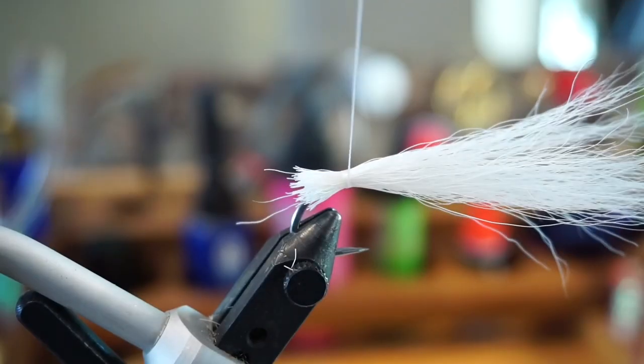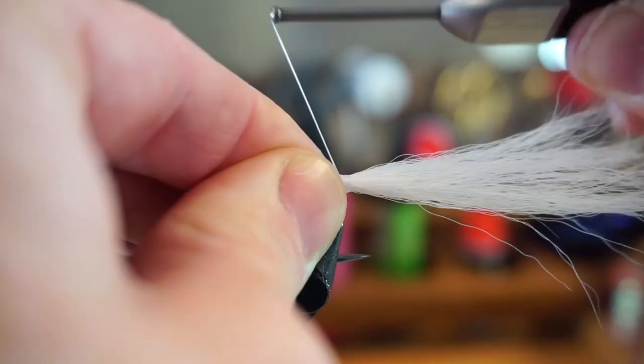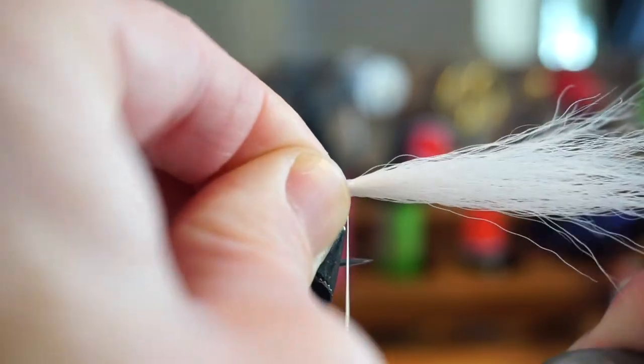This is what the front of the hook should look like. Once the fur is evenly surrounding the hook shank, make a few tight wraps to make sure it will not spin.